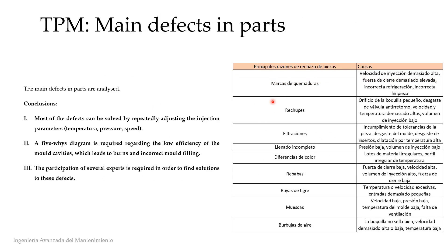This table shows the most common defects found in the parts manufactured during this period and the most common causes that lead to them. Most of these, such as burns or diesel effect, incomplete filling of the mould, and air bubbles, can be solved by repeatedly adjusting the injection parameters such as temperature or pressure. But others, such as the low efficiency of the mould cavities, require a more complex solution in which multiple groups of experts have to intervene.